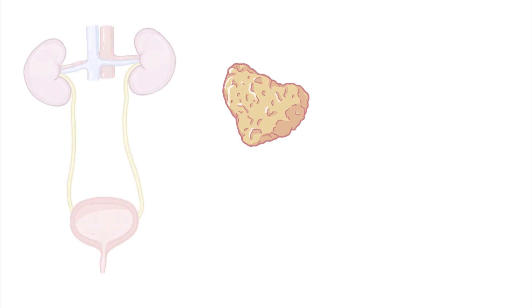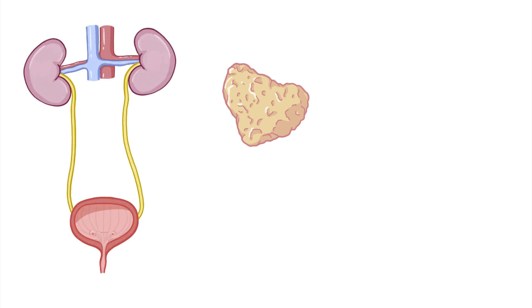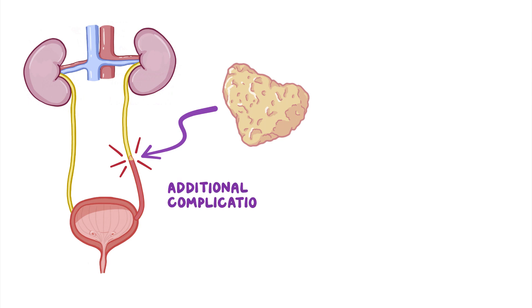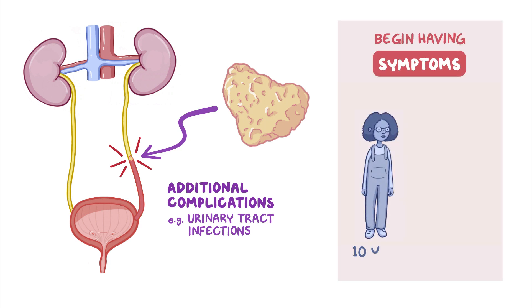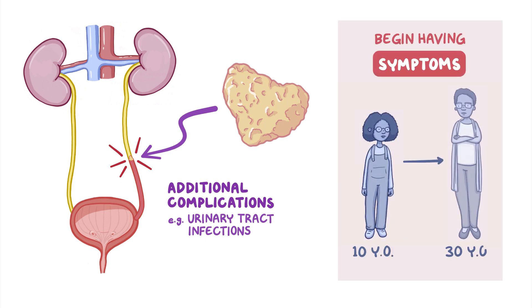Depending on their size, stones may obstruct the urinary tract and slow or stop the flow of urine. This can lead to additional complications like urinary tract infections. Some individuals won't form stones, but others typically begin having these symptoms between 10 and 30 years old.